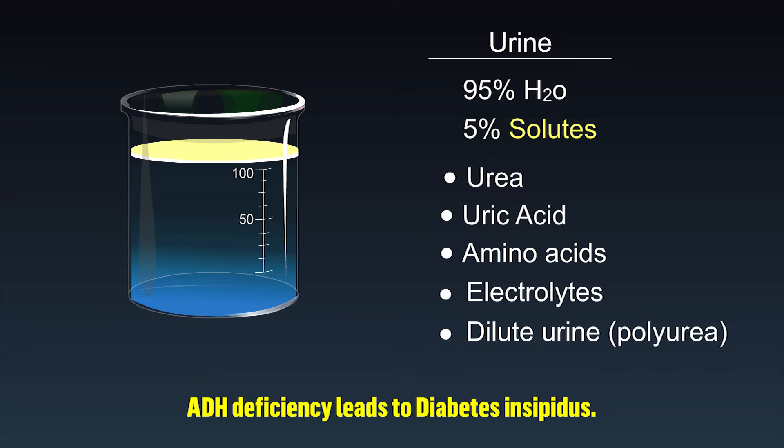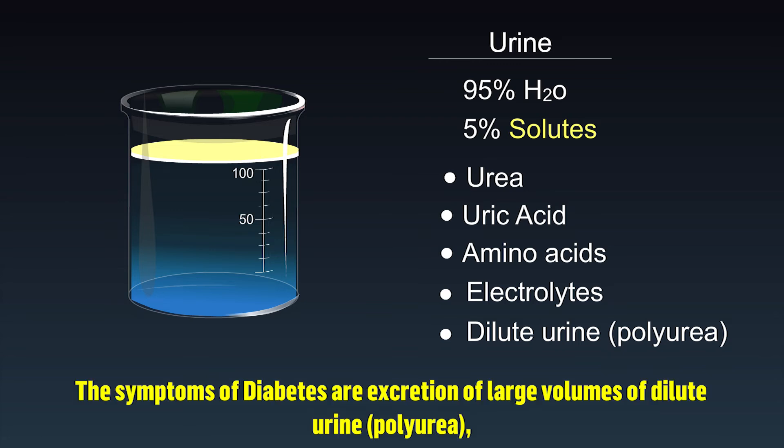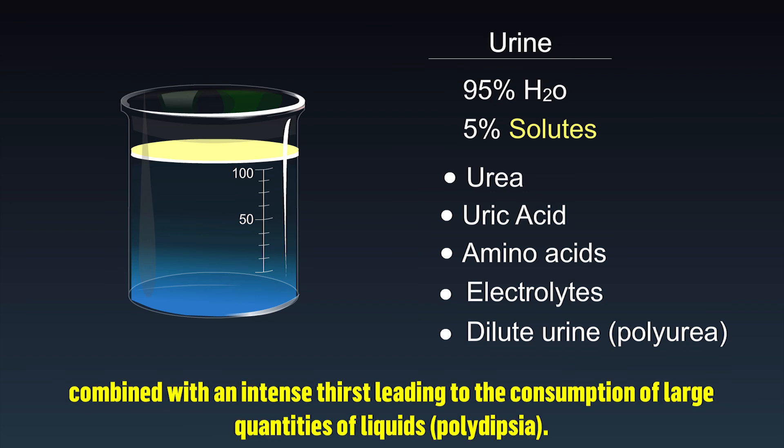ADH deficiency leads to diabetes insipidus. The symptoms are excretion of large volumes of dilute urine, polyuria, combined with an intense thirst leading to the consumption of large quantities of liquids, polydipsia.